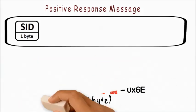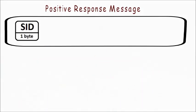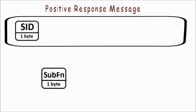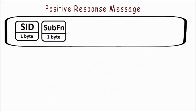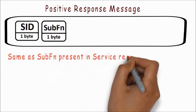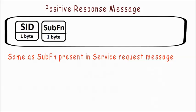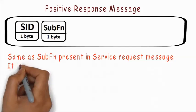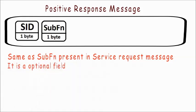Following the positive response service identifier comes the sub-function byte, which is the same as the sub-function present in the service request message. It is an optional field. If the request message has a sub-function field, then the positive response also has the same sub-function field, and vice versa.